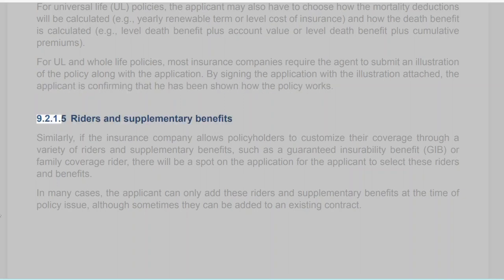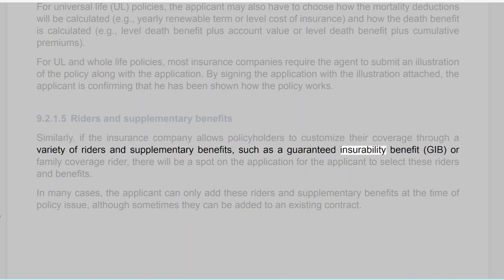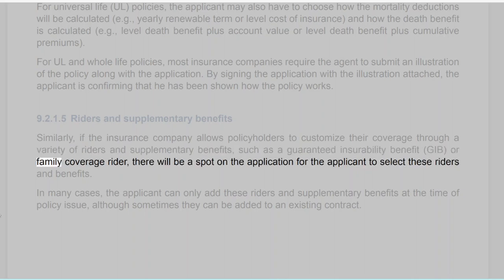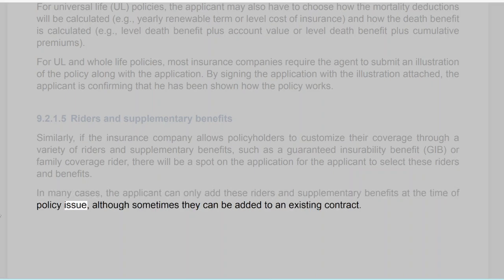Section 9.2.1.5: Riders and Supplementary Benefits. Similarly, if the insurance company allows policyholders to customize their coverage through a variety of riders and supplementary benefits — such as a Guaranteed Insurability Benefit (GIB) or Family Coverage Rider — there will be a spot on the application for the applicant to select these riders and benefits. In many cases, the applicant can only add these riders and supplementary benefits at the time of policy issue, although sometimes they can be added to an existing contract.